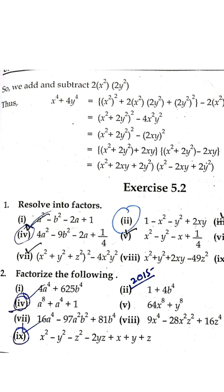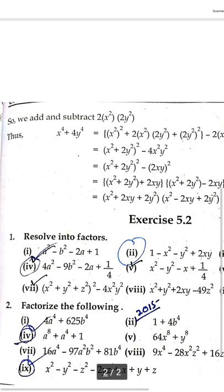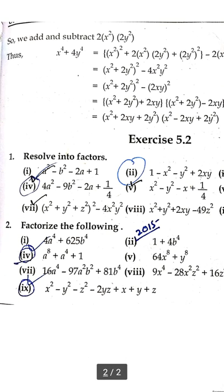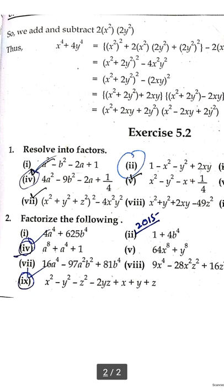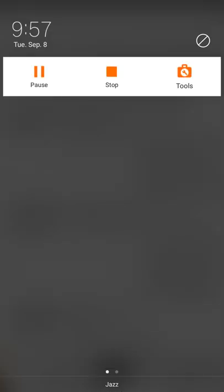For exercise 5.2, apply the a² minus b² formula to resolve the following questions. Question number 1 and question number 2 — factorize the following completely. Dear students, you have to send this exercise in the form of an assignment in the group. Thank you, I'll see you next time.